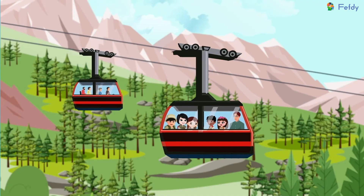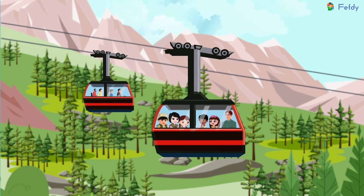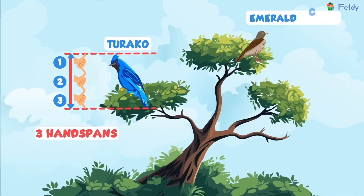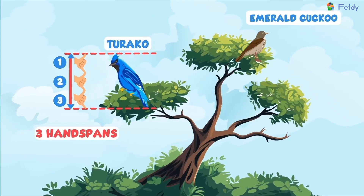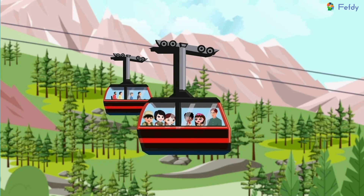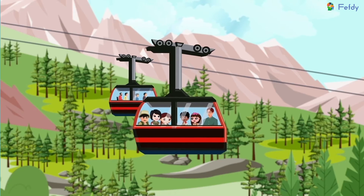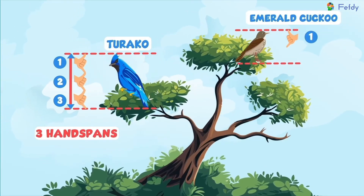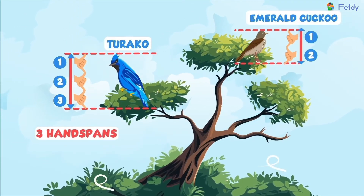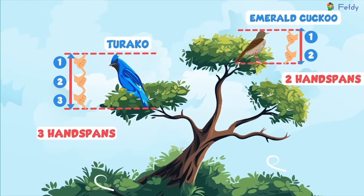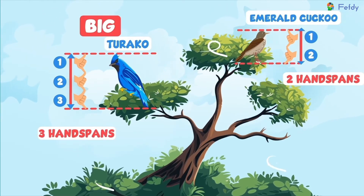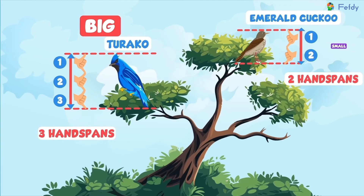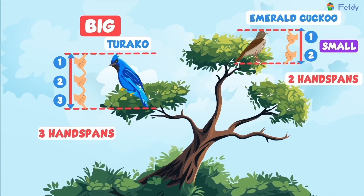Look at there, Dad. What bird is it? It is emerald cuckoo. What is the height of the bird emerald cuckoo, Dad? One, two. Two handspans. The length of the turaco is three handspans. The length of the emerald cuckoo is two handspans.